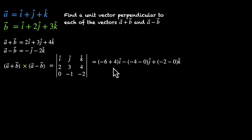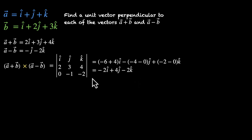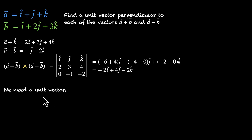So this becomes minus 2i-cap plus 4j-cap minus 2k-cap. We now have a vector that's perpendicular to both of these, but that's not the final result — we need a unit vector. We can get that by dividing this vector by its magnitude.